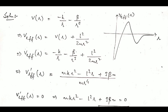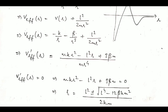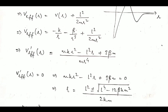For that, we need to ensure there are no roots of the derivative of the effective potential. We can do this by calculating V'_eff(R) and setting it to zero, finding we must solve the quadratic equation: mkR² - L²R + 3βm = 0.